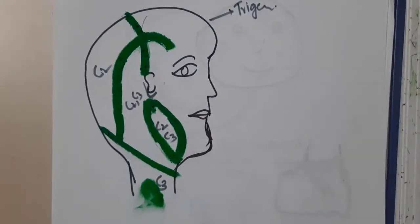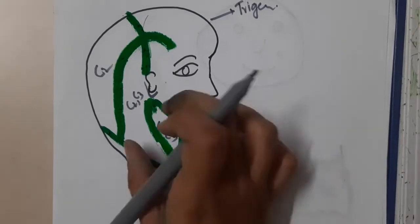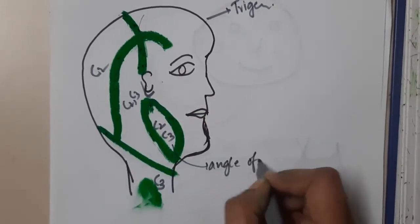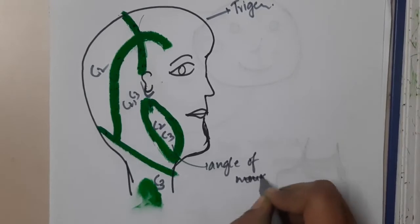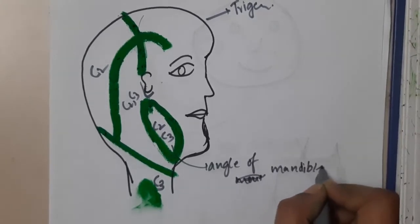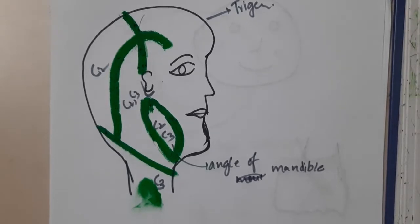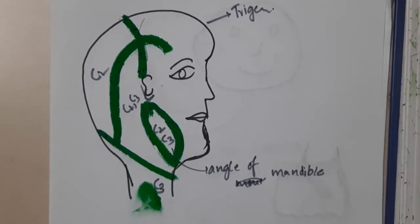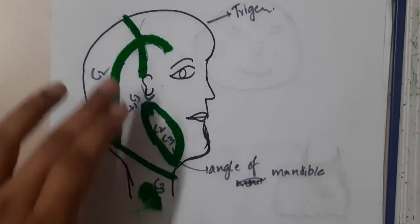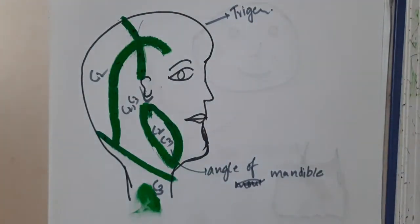This part is completely supplied by the trigeminal nerve, but the angle of mandible is supplied by C2 and C3. So we can say the whole face is supplied by trigeminal nerve except the angle of mandible, which is supplied by ventral rami of C2 and C3.